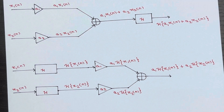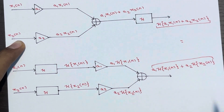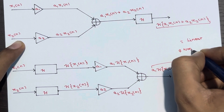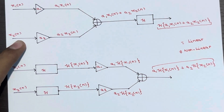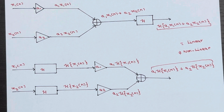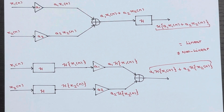The system H is linear whenever the expression from Case 1 equals the expression from Case 2. If they are not equal, it is a nonlinear system. You should know the superposition property — that's all. We will solve at least four or five numerical examples based on linearity, so the concept will be completely clear to you.